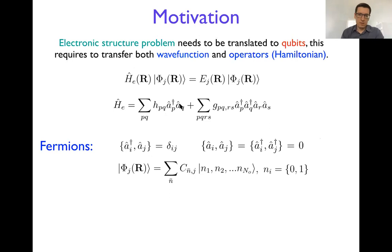They are anti-commuting operators that means that if you multiply them in one way and then the same operators multiply in a different way, then you don't get, in this particular case of creation and annihilation, you get the delta ij.